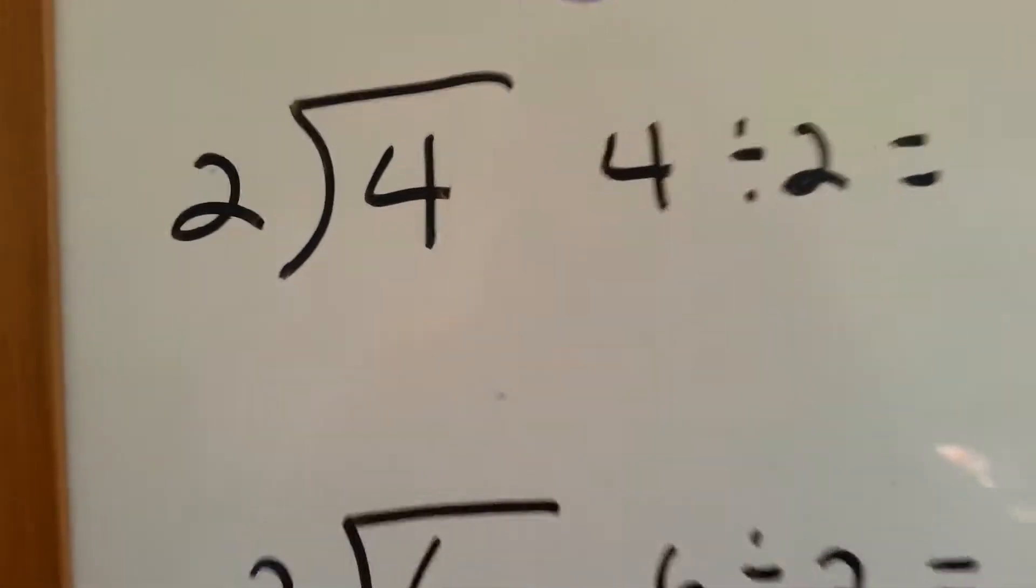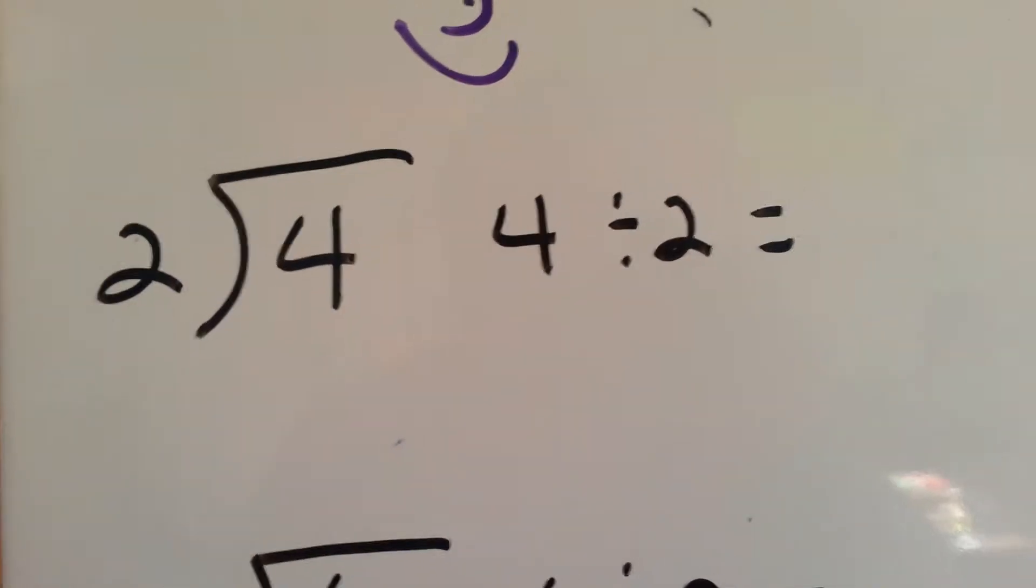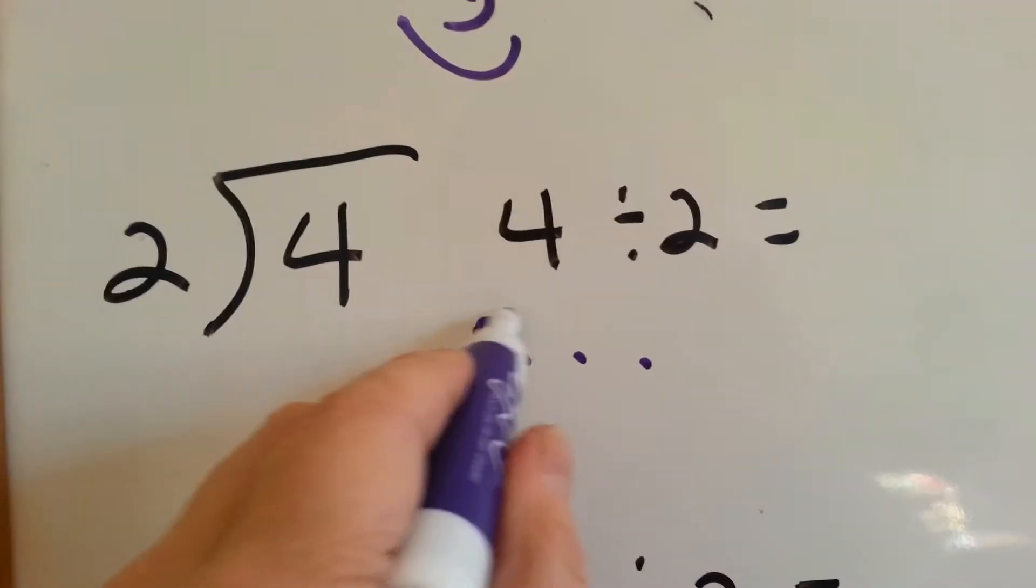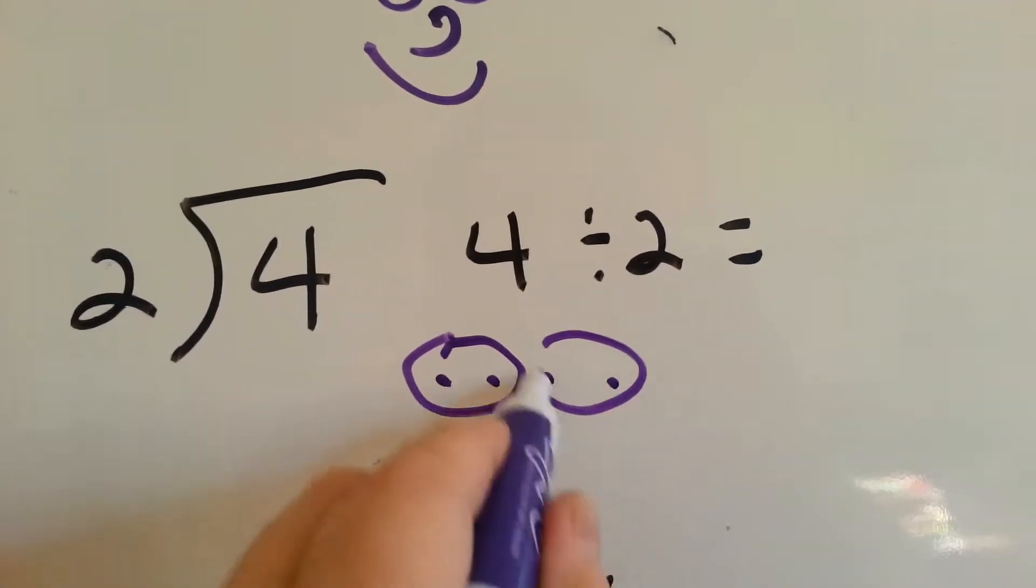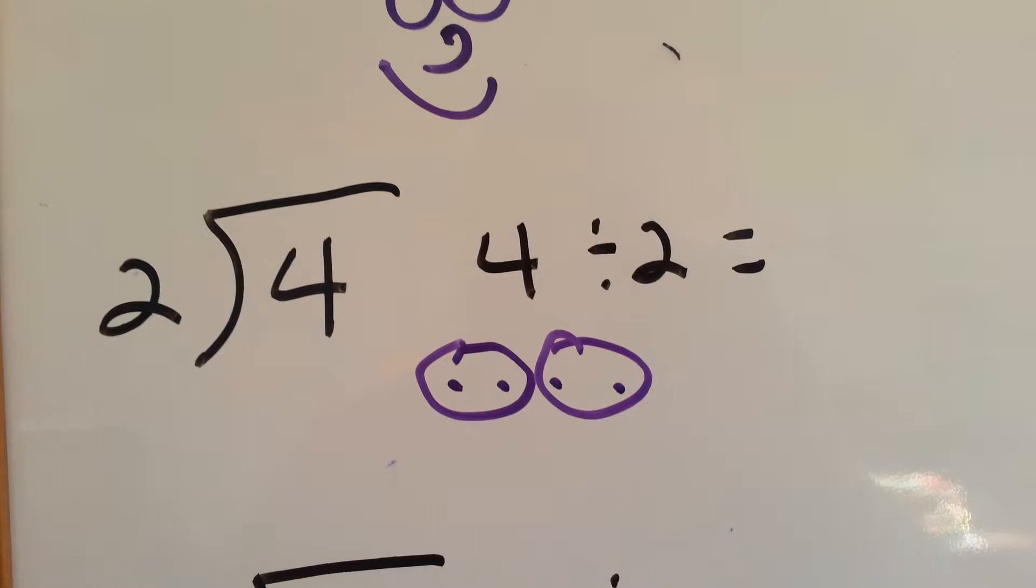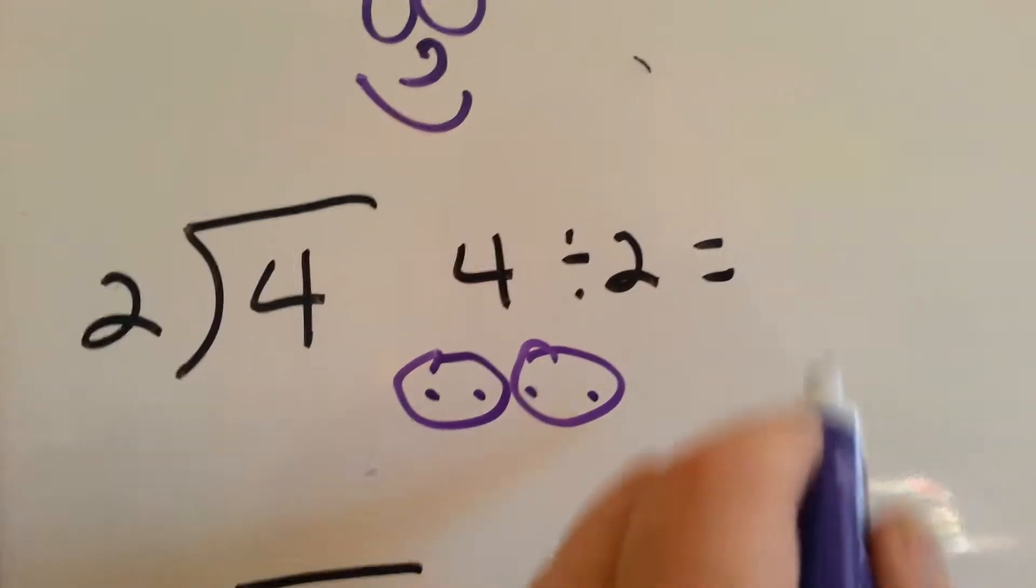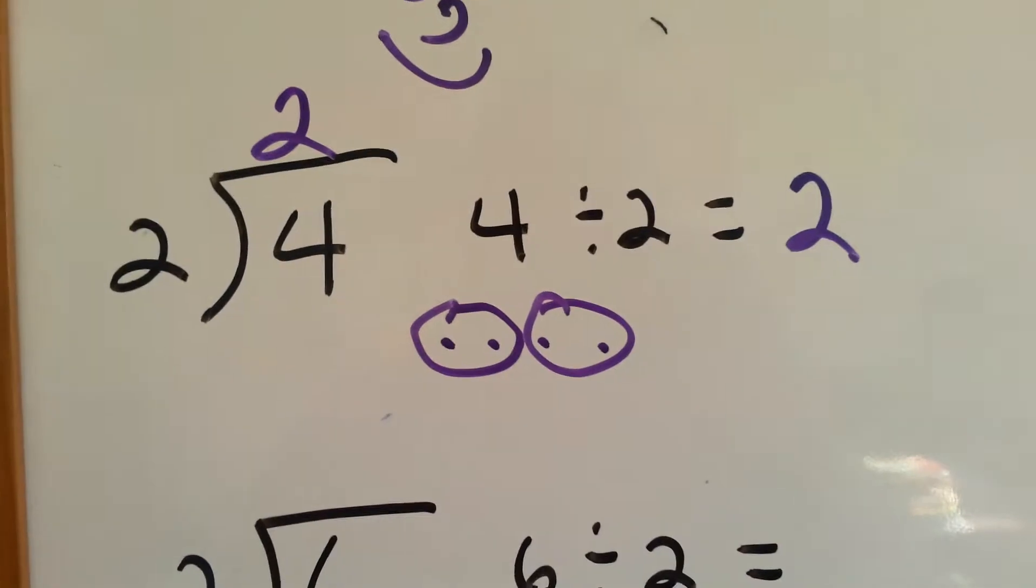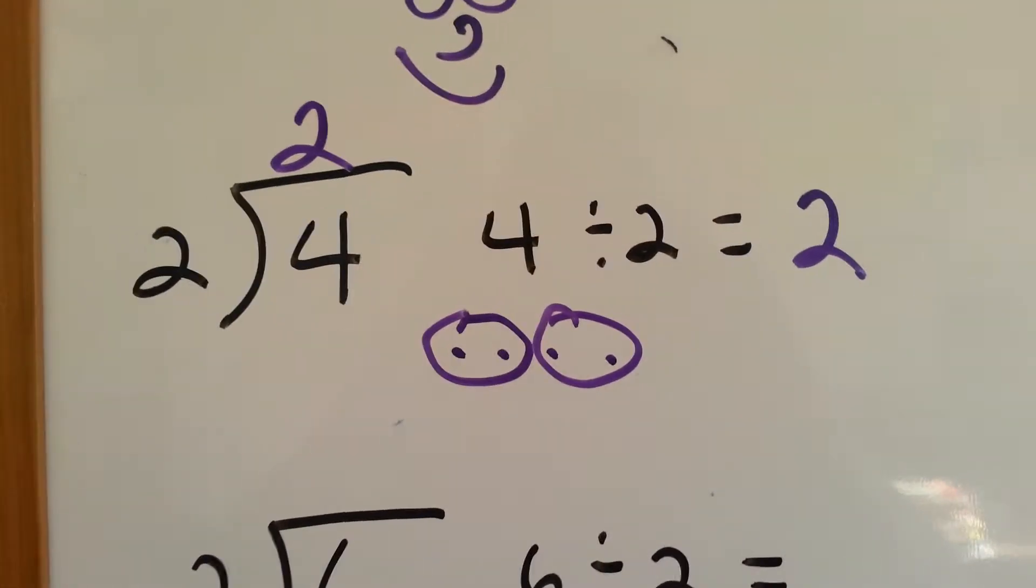Okay, let's look at this one. 4 divided by 2. 1, 2, 3, 4. We're going to put 2 dots in this one, and 2 dots in this one. 4 divided by 2 is... How many dots are in there? 2. 2 groups with 2 dots. See that?